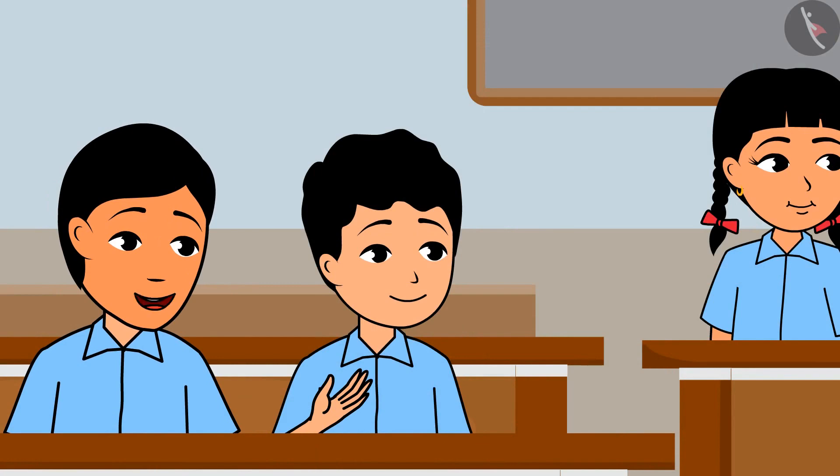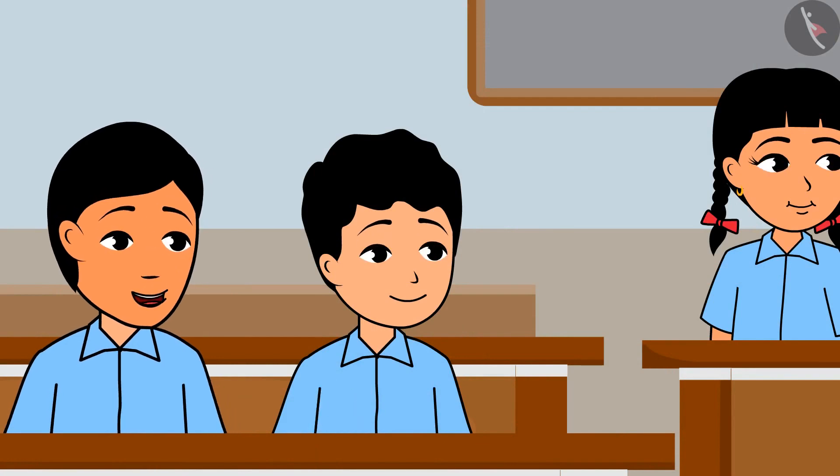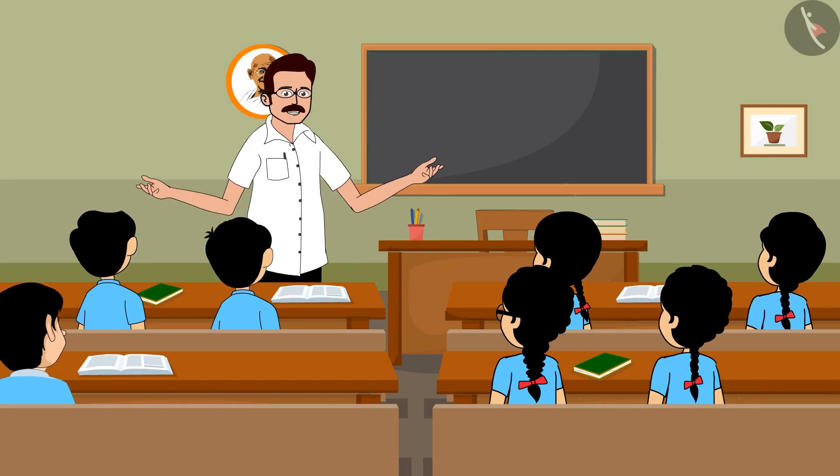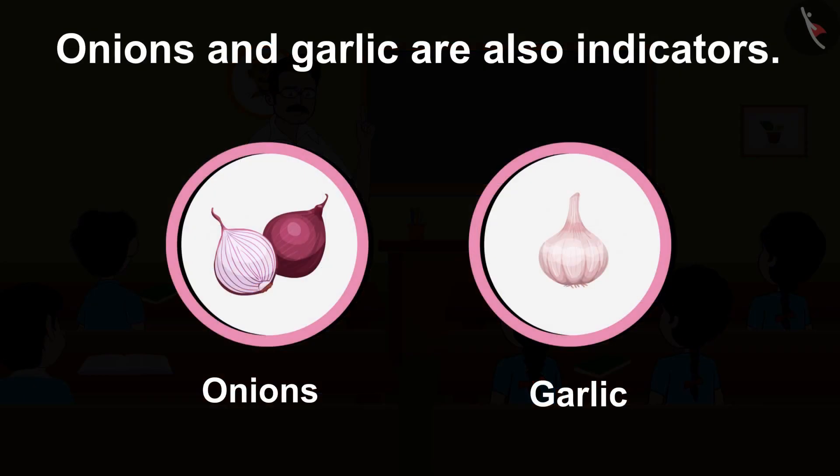Sir, I am also surprised. How these can be indicators? Not only these, there are many things that can be used as indicators. You will be surprised to know that onions and garlic are also indicators.